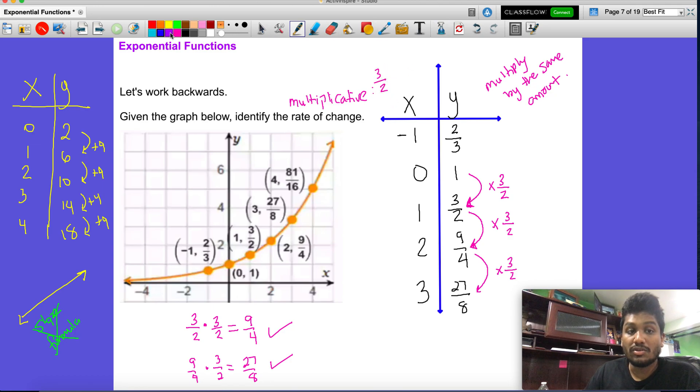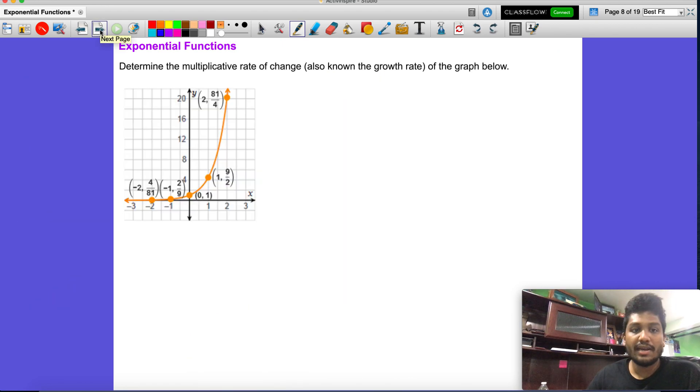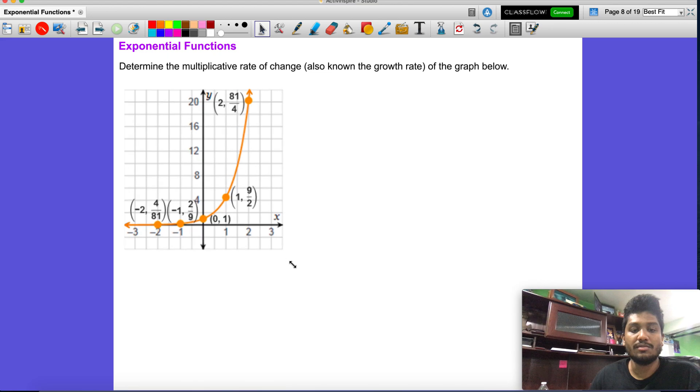This is also known as our b value. That's also our b value. All right, so let's just do one or two more examples on this. So here we have the same thing. Let me just go ahead and make this a little bit bigger for you to see.